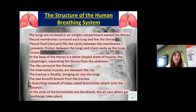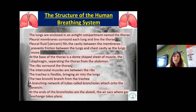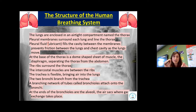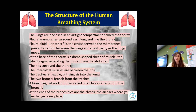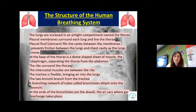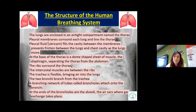The trachea is flexible, bringing air into the lungs. The two bronchi branch from the trachea. The branching network of tubes called bronchioles attach to the bronchi. So we have trachea, bronchi, bronchioles, and at the end of the bronchioles you have the alveoli — what we refer to as the air sacs, where gas exchange takes place.